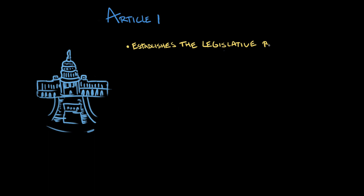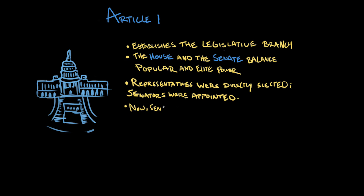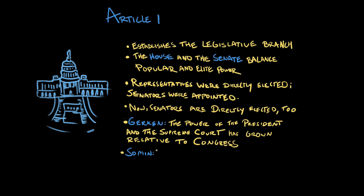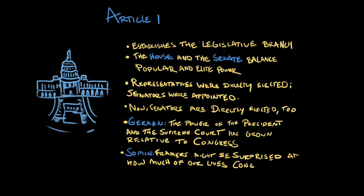So we've learned that Article 1 of the Constitution establishes the legislative branch of U.S. government, made up of the Senate and the House of Representatives. These two bodies were created to balance popular power with elite power. What might really surprise the framers about Congress today is how its power has evolved — the powers of the president and the Supreme Court have grown compared to Congress, yet Congress can now regulate far more of our lives than the framers anticipated. To learn more about Article 1, visit the National Constitution Center's Interactive Constitution and Khan Academy's resources on U.S. government and politics.